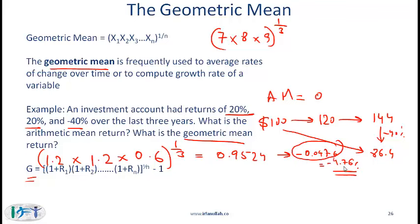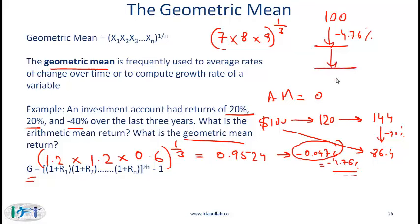To understand this result: if you start with $100 and lose 4.76% every year for three years, you end up with approximately $86.40. So the geometric mean is telling you on average how much you are losing every year — it is the constant annual return that produces the same cumulative result as the actual varying returns.